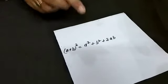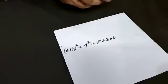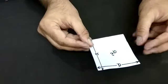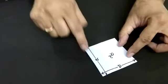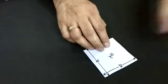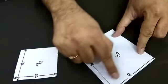We are going to understand the derivation with a concrete example. Suppose this is a square with side a, so the area of this square is a². And this is another square with side b.